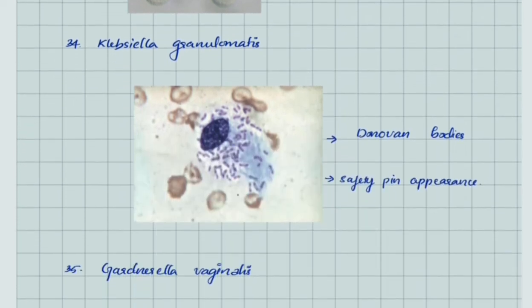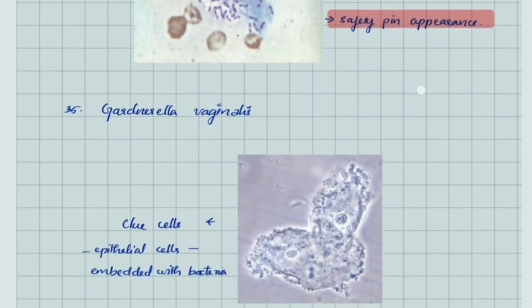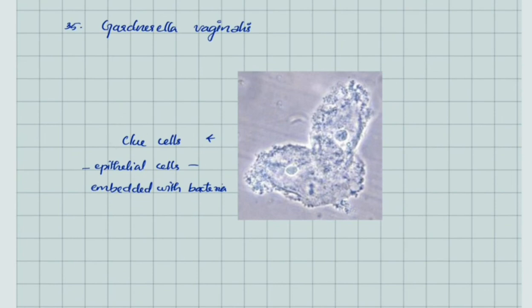Klebsiella granulomatis shows Donovan bodies—presence of bacilli within macrophages. The bacilli itself has safety pin appearance. Gardnerella vaginalis—presence of clue cells is characteristic of bacterial vaginosis. Clue cells are epithelial cells embedded with bacteria.